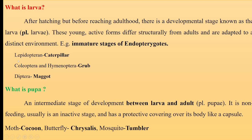This larvae in different orders is known by different names. In case of Lepidoptera, the larvae is known as caterpillar. However, in Coleoptera and Hymenoptera, this larvae is known as grub. And in case of Diptera, this larvae is known as maggot.